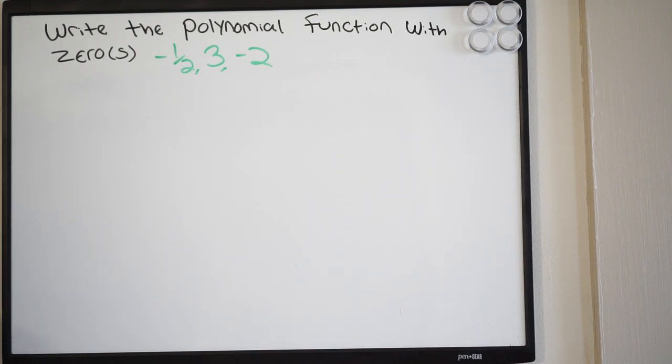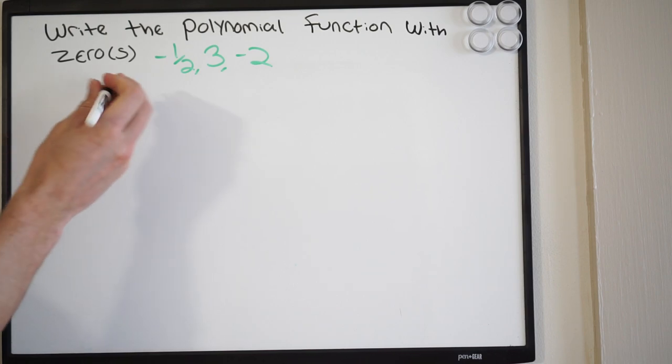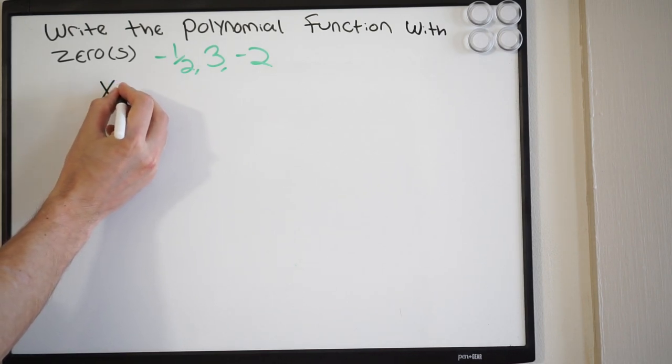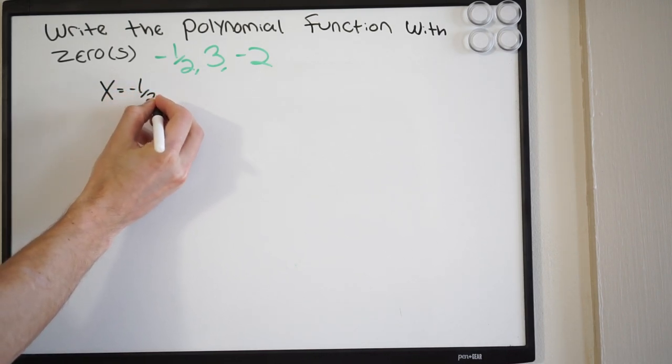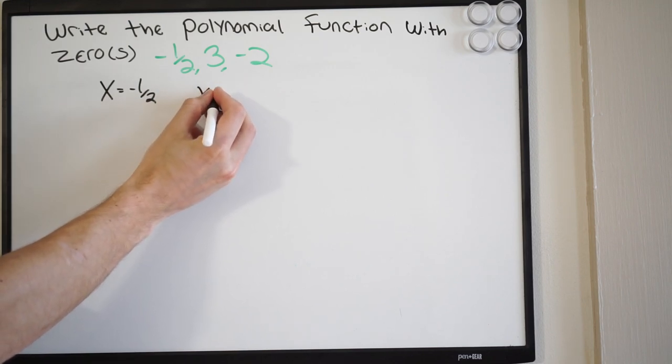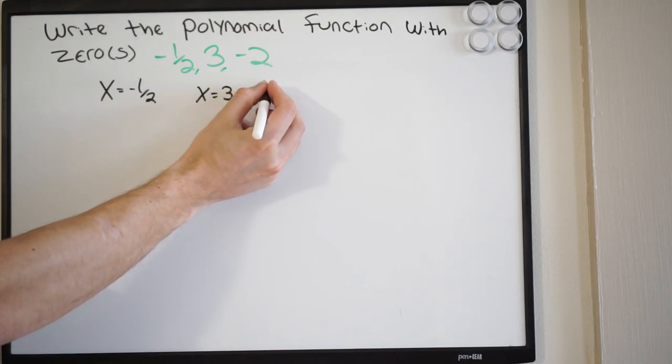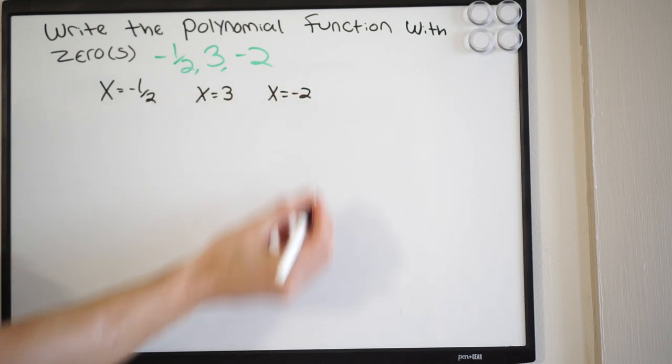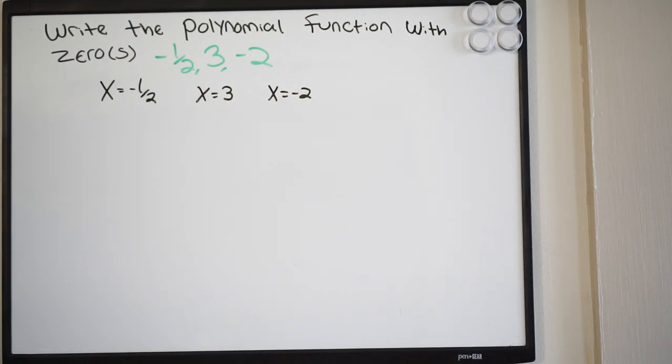And in order to work backwards, remember, when we find the zeros of a polynomial function, we need to first factor that polynomial and then we solve each factor to find the zeros. So we have to work in reverse here. This really says x equals negative a half, x equals three, and x equals negative two. We're working in reverse, so we're going to put it back into factored form, and once it's back into factored form, we're then going to expand it out to get the polynomial function.